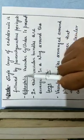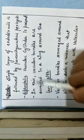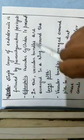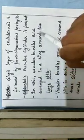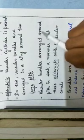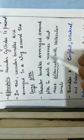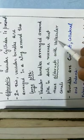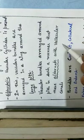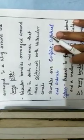In the siphonostele there are vascular bundles arranged in a ring around the large pith. The vascular bundles are arranged around the pith in such a manner that they alternate with the vallecular canals. This means the vallecular canals are present where the grooves are, and the vascular bundles are present where the ridges are.